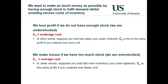The balance we have to make is to make as much money as possible, having stock to fulfil demand, whilst avoiding excess costs of inventory. These two costs are shown below. Potentially, we lose profit if we do not have enough stock — clearly, if we've run out, then we can't make the sale and the margin we would have achieved. This is expressed in the underage cost.